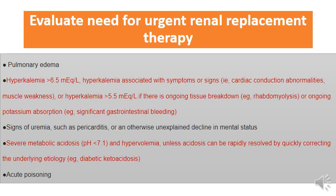Indications for urgent renal replacement therapy include: pulmonary edema with respiratory failure from volume excess; hyperkalemia associated with cardiac conduction abnormalities, or hyperkalemia with expected worsening from ongoing tissue breakdown (rhabdomyolysis) or significant gastrointestinal bleeding; signs of uncontrollable uremia such as uremic encephalopathy or uremic pericarditis; and severe metabolic acidosis that cannot be rapidly resolved by correcting the underlying etiology, such as diabetic ketoacidosis or acute poisoning.